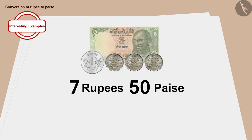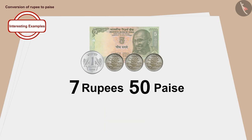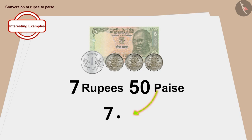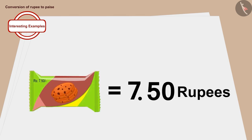How do we write this using a dot? It is very easy. Make a point, and the number of rupees is on the left side of the point — that is seven — and the number of paise is to the right of the point — that is 50. In this way we can write the price of a packet of biscuits in rupees and paise.